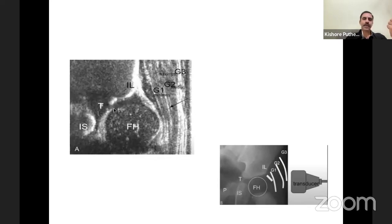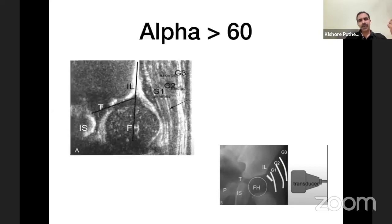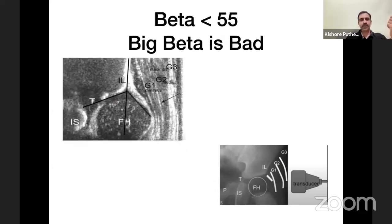On ultrasound we can see the iliac crest, the bony acetabulum, the femoral head, and the gluteal muscles — gluteus minimus, medius, and maximus. Drawing a vertical line along the iliac crest and another line parallel to the bony acetabulum gives the alpha angle, which should normally be more than 60 degrees. The beta angle is between the vertical line and the gluteal muscles; a large beta is a bad sign — it should be less than 55 degrees.